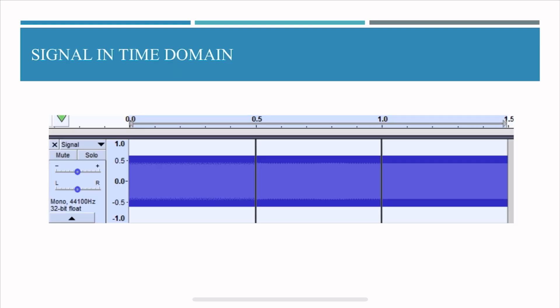So this is an example of a signal in the time domain. I've intentionally included three different pure tones in the signal. So the first 0 to 0.5 second is 500 Hertz, 0.5 to 1 second is 1000 Hertz, and 1 to 1.5 is 1500 Hertz.